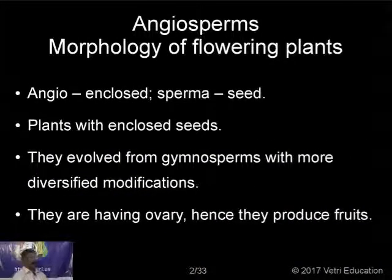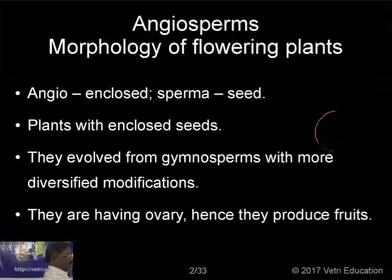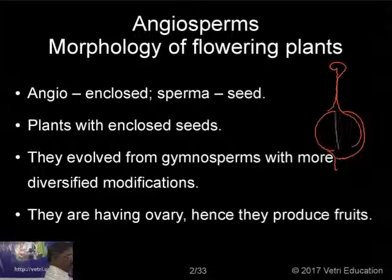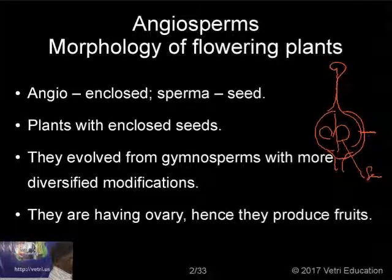The angiosperms. 'Angios' means enclosed, 'sperma' means seed — so these are plants having enclosed seeds. The seeds are inside the fruit. In an angiospermic plant, you can find the gynoecium, and inside the gynoecium, you can find the ovules. After pollination and fertilization, the ovary becomes the fruit and the ovules become the seeds. So the seeds are inside the ovary, and since they have an ovary, they produce fruits.